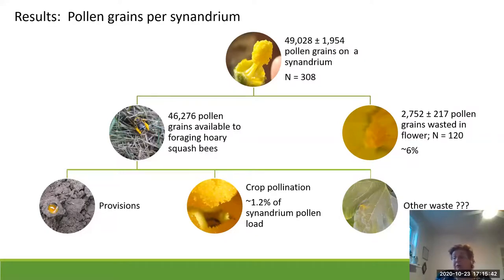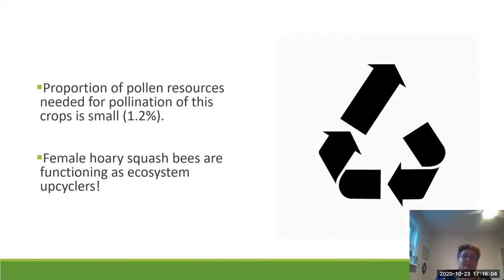The bees also deposited pollen on the gynoecium of the flower to produce pollination. I did a rough calculation and found that they only needed about 1.2% of the synandrium pollen load to pollinate all the female flowers in a patch. Because the proportion of pollen needed for pollination is so small — just 1.2% — female hoary squash bees can be considered as functioning as ecosystem upcyclers: they're taking a waste product, which is pollen, and turning it into offspring.